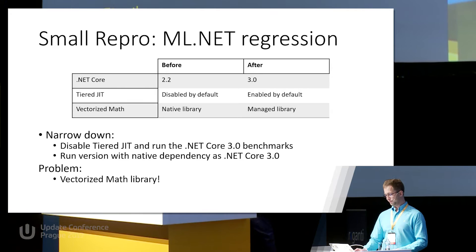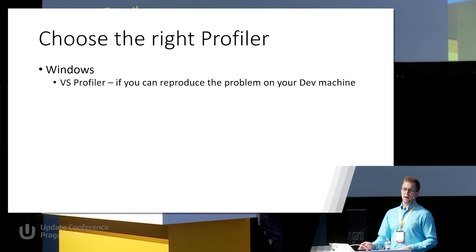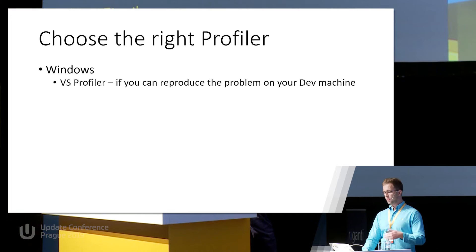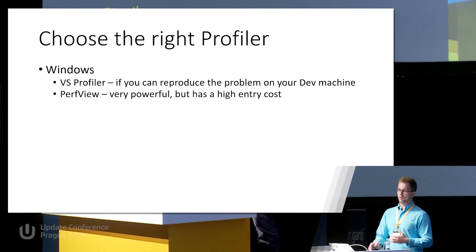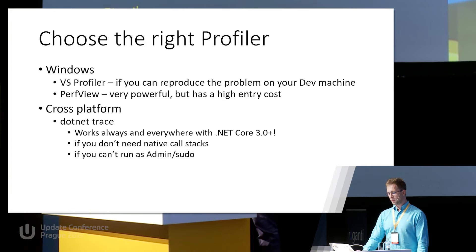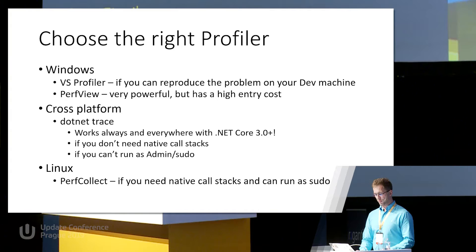Once we have a small repro case, we should choose the right profiler. If you are developing on Windows and can reproduce the issue locally, use Visual Studio Profiler. If the issue occurs on Windows but you cannot reproduce it locally, use PerfView — it's production-ready and the most powerful .NET profiler. On every other OS you can try .NET Trace, and on Linux, if you care about native call stacks, you can use PerfCollect. Now I'm going to demo all of them for you.